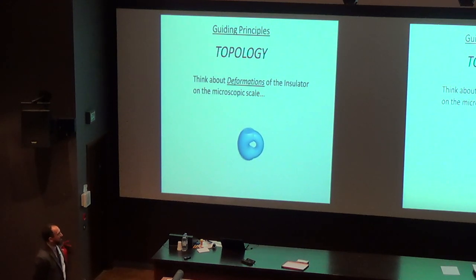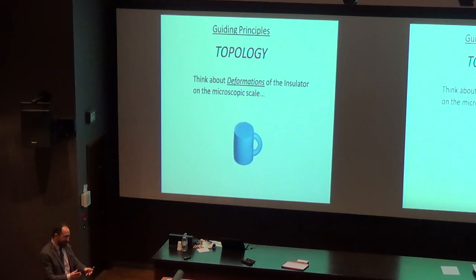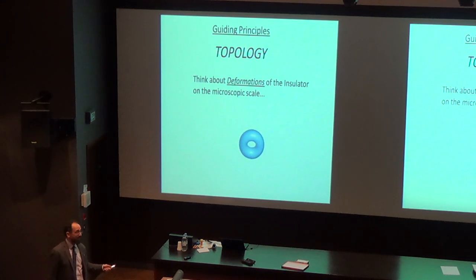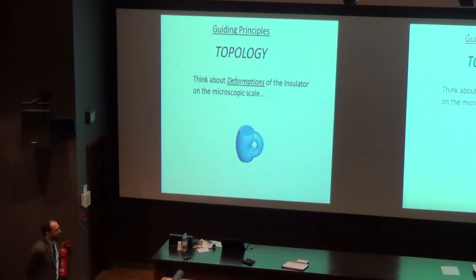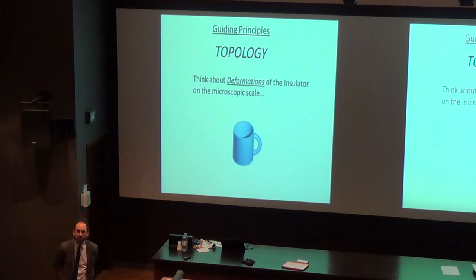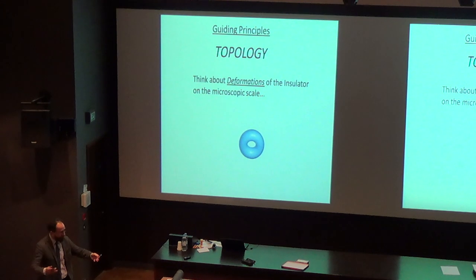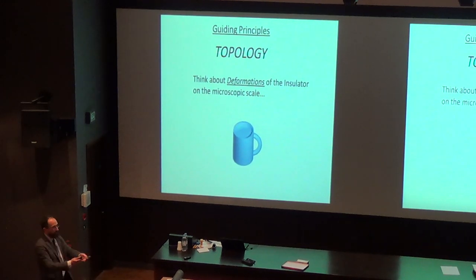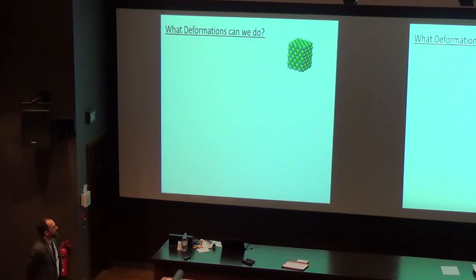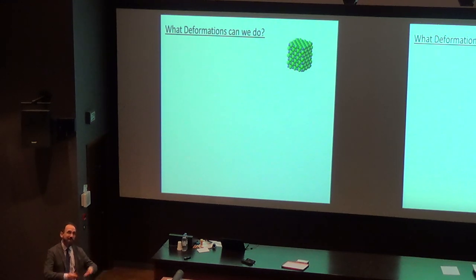The thing we're going to do is think about deformations of the insulator on the microscopic scale. Despite the fancy movie making you think about squeezing clay, that's not what I mean. What I'm actually thinking about is deforming the microscopic theory — changing the microscopic theory of the universe to get from one theory to another, changing the rules bit by bit or continuously. For those who have learned about Hamiltonians, what I'm doing is changing the microscopic Hamiltonian.